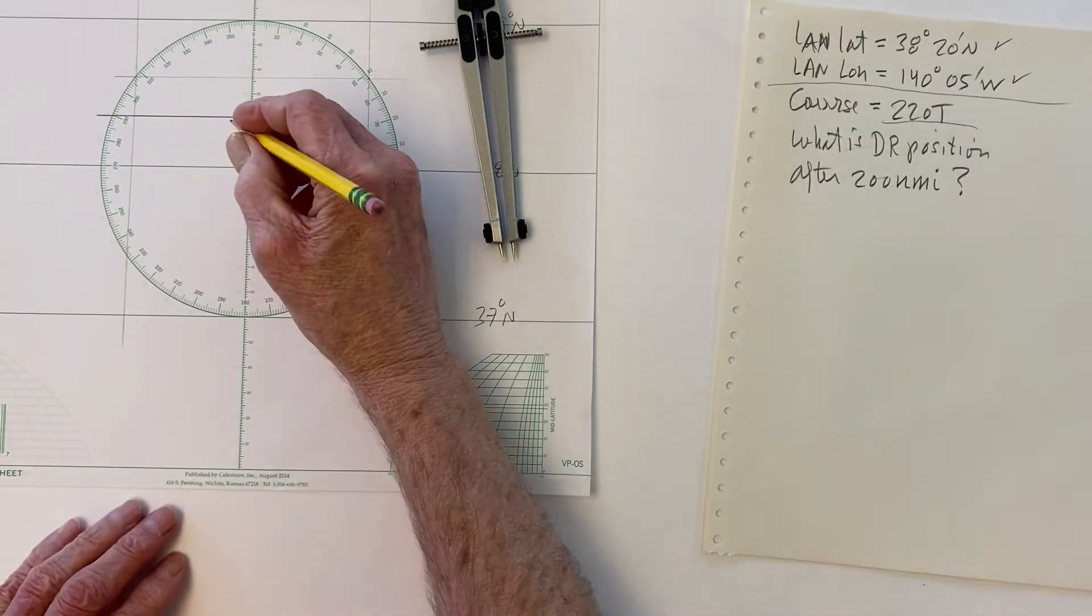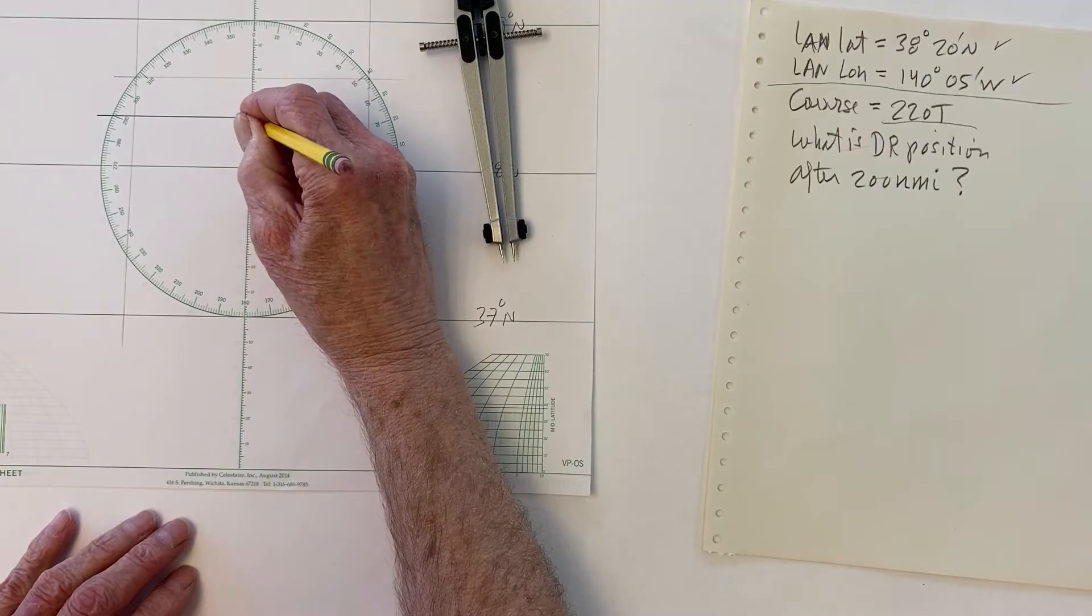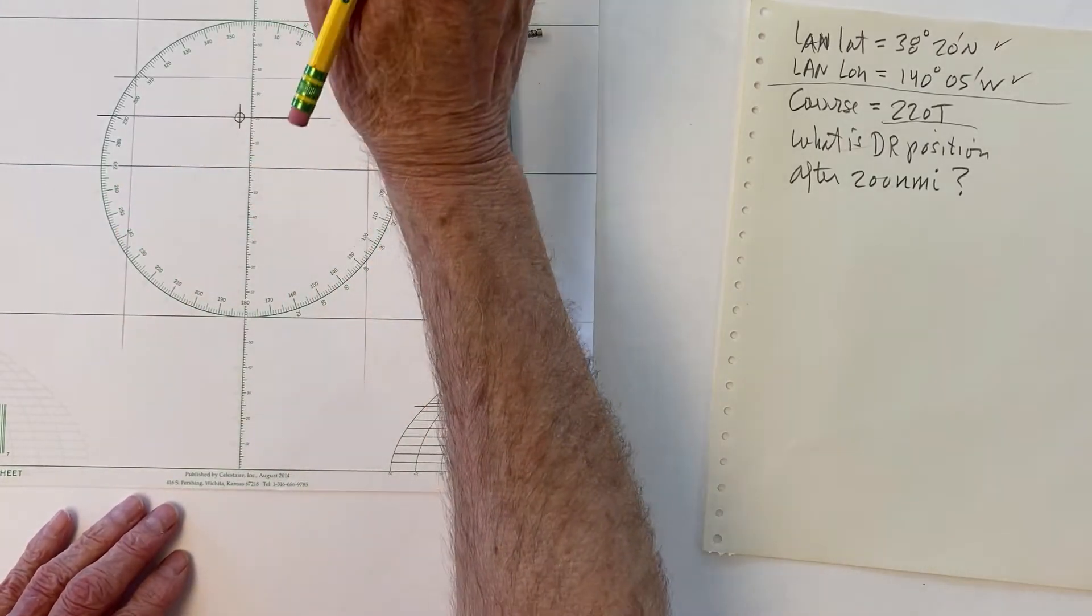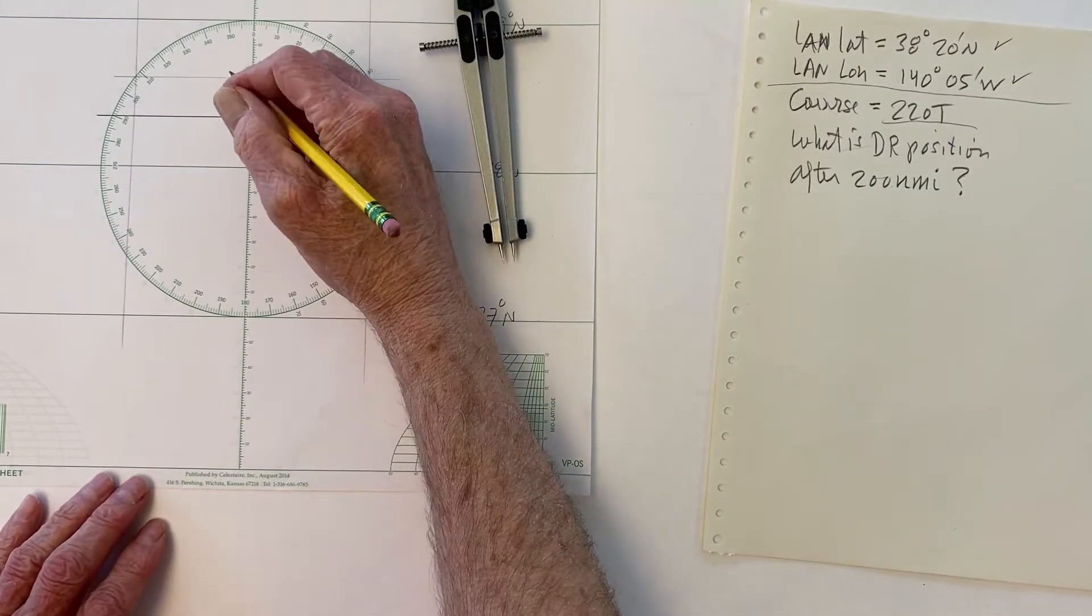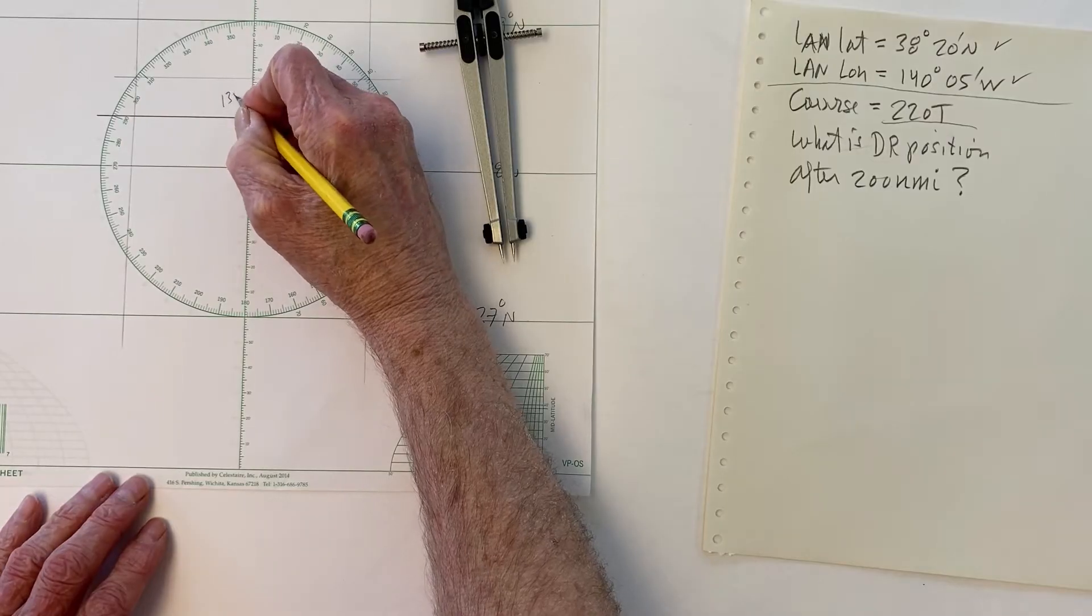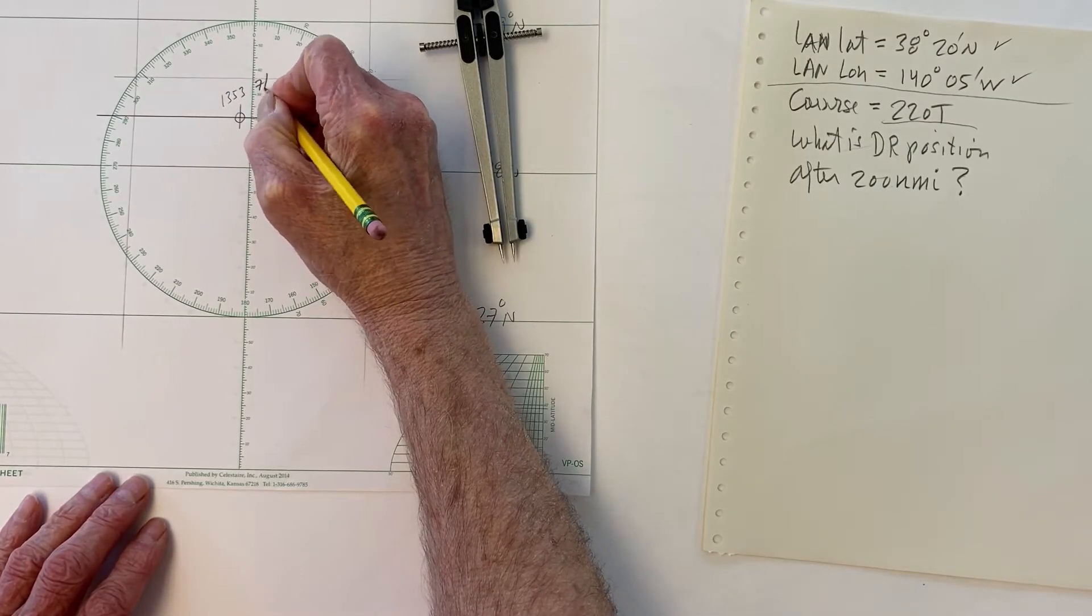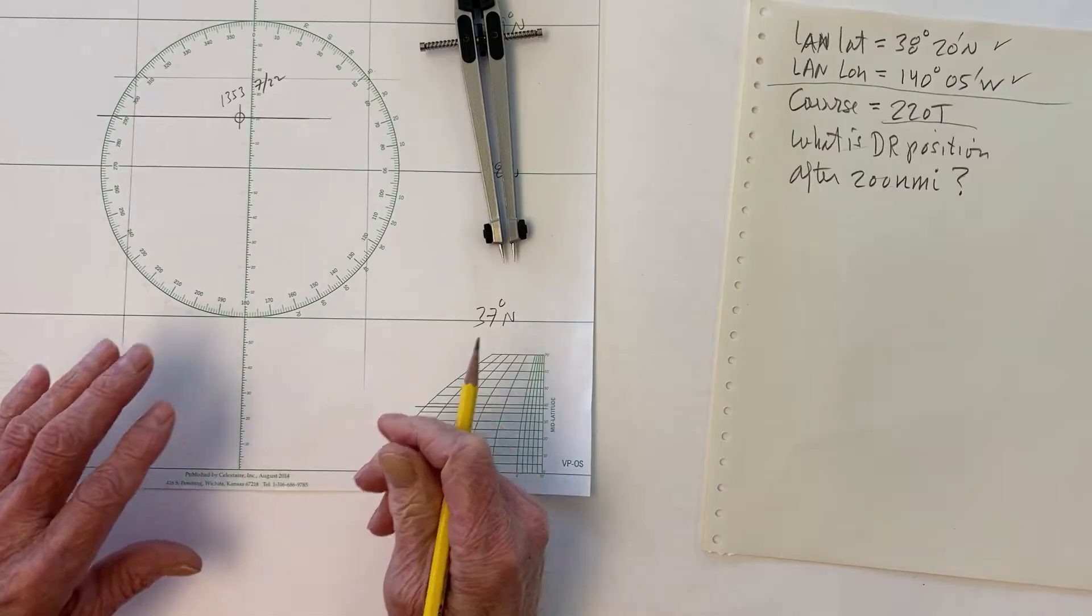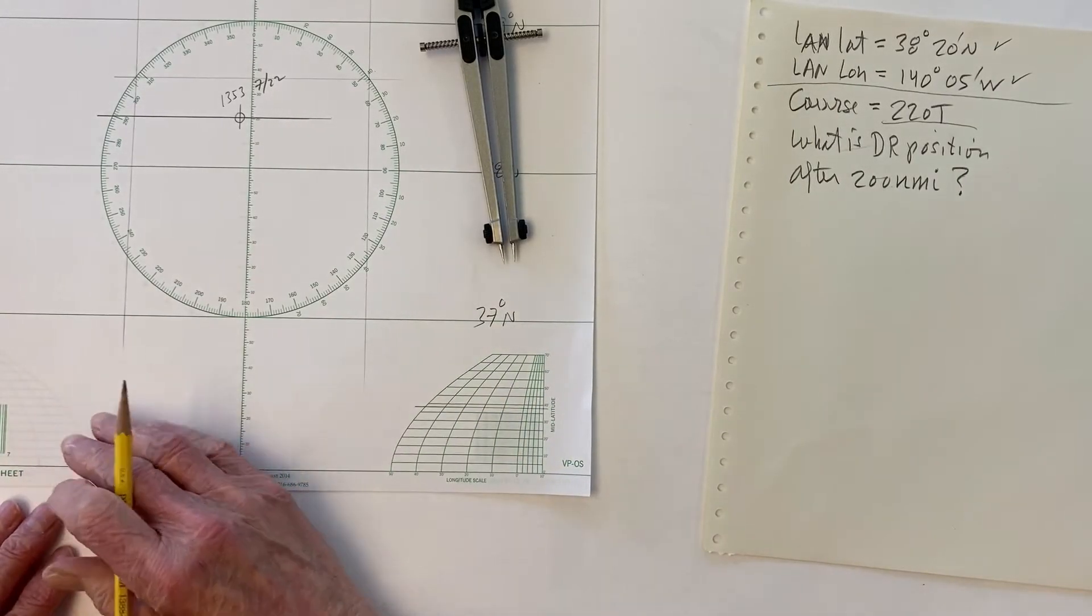Okay, so that was our position. Normally a position gets marked with a circle, and you would have some time. You could put down there, like 13, 53, 7, 22, something like that. Now, coming out of there, we have a course.